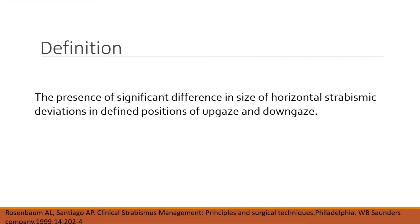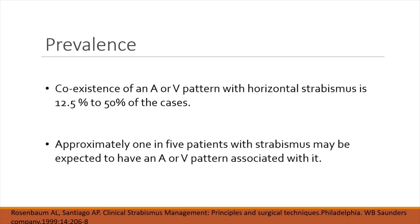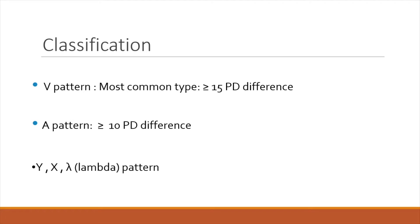When we look in upgaze, the angle is going to be something, and in downgaze, the angle is going to be something different. In primary position, the angle is going to be something else. About one in five patients who has squint, there is prevalence of A or V patterns. So about 12.5 to 50% of cases of squint have some sort of pattern associated with it — it may be complete or incomplete.